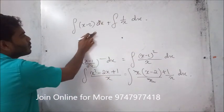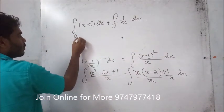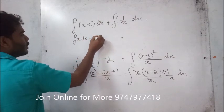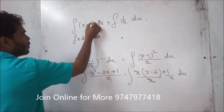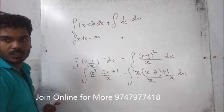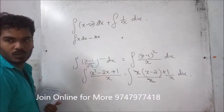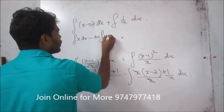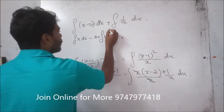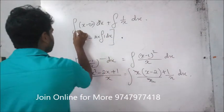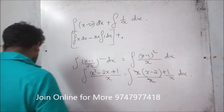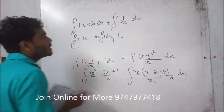Integration of x minus 2 dx: integration of x dx minus 2 into 1, that is 2 into integration of 1 dx. That's right. Plus integral of 1 by x, which gives log x.